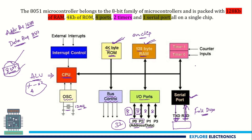There are also two timers — Timer 0 and Timer 1. These two timers are helpful in the processing of information in the CPU, and they can also be used as counters by using the counter inputs.